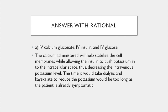The answer is A: give the patient IV calcium gluconate, IV insulin, and IV glucose. The calcium administered will help stabilize the cell membranes, while allowing insulin to push potassium into the intracellular space, thus decreasing the serum potassium level. The time it would take dialysis and K-exalate to reduce the potassium would take too long, as the patient is already symptomatic.